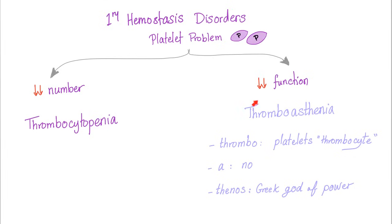Primary hemostasis problems can involve the platelet number (thrombocytopenia) or platelet function (thrombasthenia). In ITP, actually both are present, but more importantly it's a problem with platelet number. Platelet function could be okay or even hyper-functioning, but the platelets are low in number. Since they are low in number, platelet count will be low and bleeding time prolonged, even though the platelets may be hyper-functioning. There are simply too few platelets to cause significant hemostatic function.